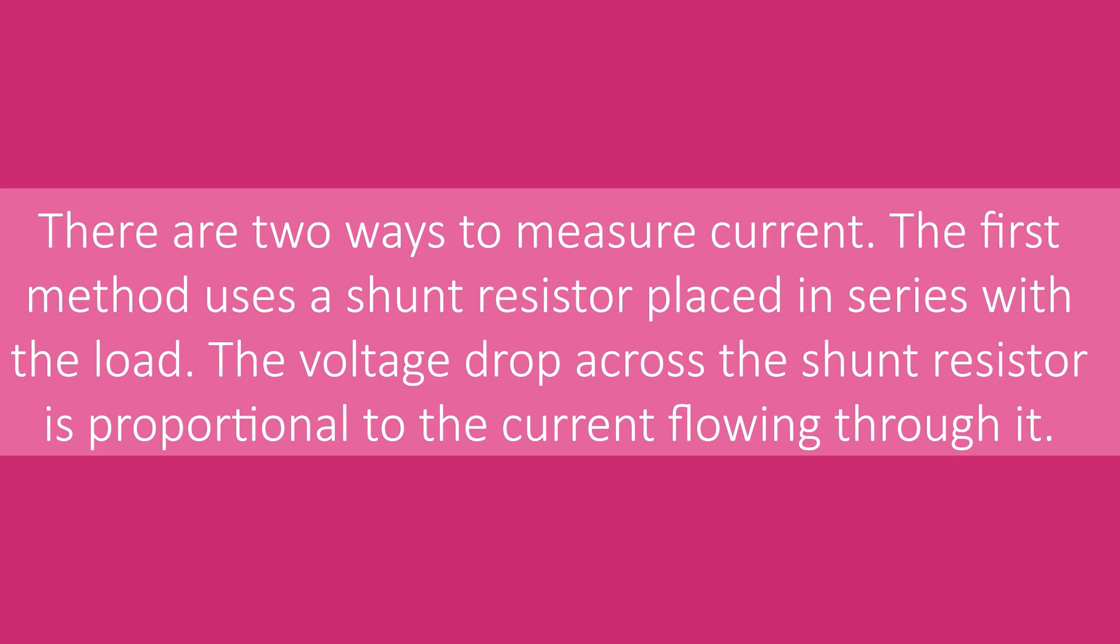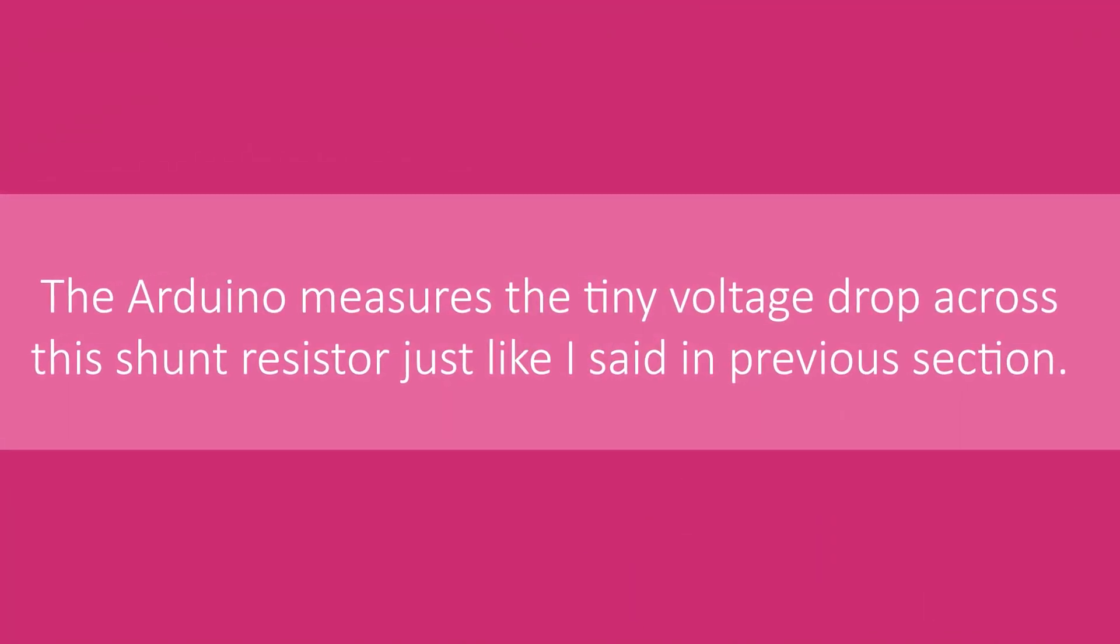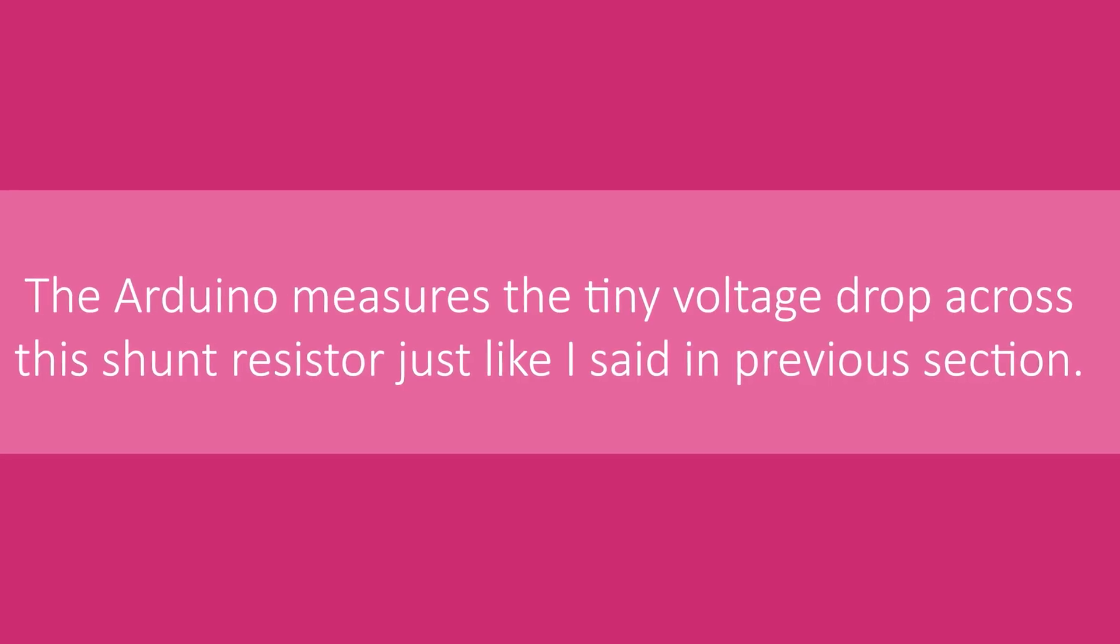Next, we will build an ammeter to measure current. There are two ways to measure current. The first method uses a shunt resistor placed in series with the load. The voltage drop across the shunt resistor is proportional to the current flowing through it. The Arduino measures the tiny voltage drop across the shunt resistor, just like I said in the previous section.